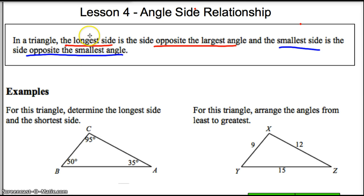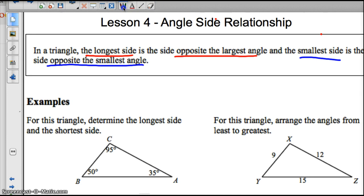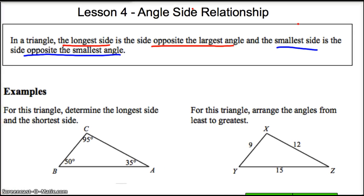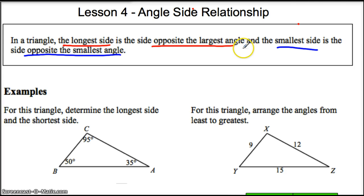Let me just read out the definition, then we'll take a look at what that means in practice. The definition for the angle-side relationship in triangles is that the longest side in a triangle is the side opposite the largest angle. And the smallest side is always opposite the smallest angle. So there's a relationship between the sides and angles — if you have a small angle, opposite that would be the smallest side.